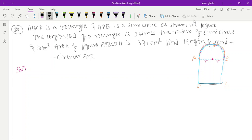If we go for this question, you can see ABCD is a rectangle. APB is a semicircle. Given in the figure, the length BC of the rectangle is three times the radius.